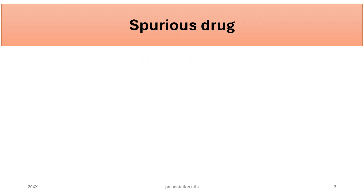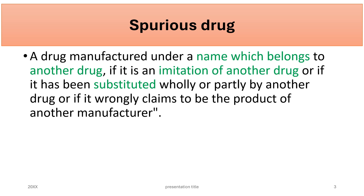What is a spurious drug? A spurious drug is a drug manufactured under a name which belongs to another drug, if it is an imitation of another drug, if it has been substituted wholly or partly by another drug, or if it is wrongly claimed to be the product of another manufacturer.